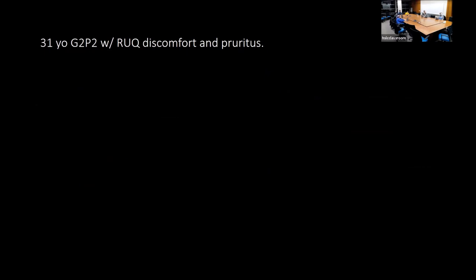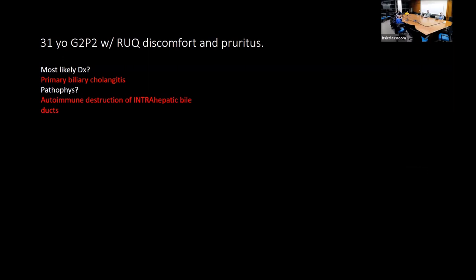A 31-year-old G2P2 with right upper quadrant discomfort and pruritus: think primary biliary cholangitis (PBC). The pathophysiology is autoimmune — targeting intrahepatic bile ducts. Other classical symptoms include hepatomegaly, jaundice, and potentially dark urine.